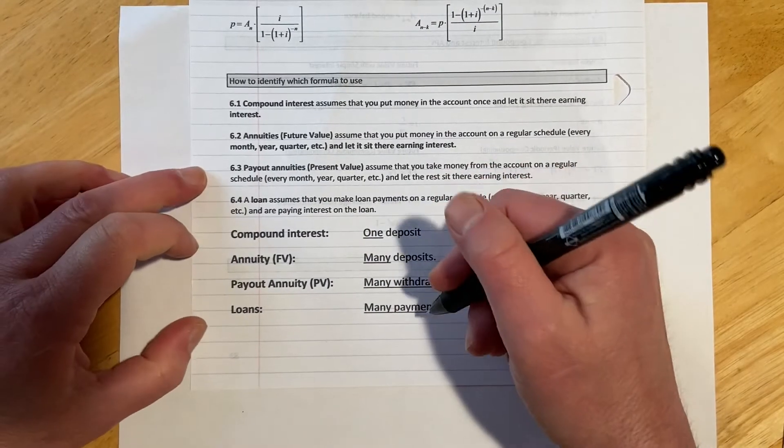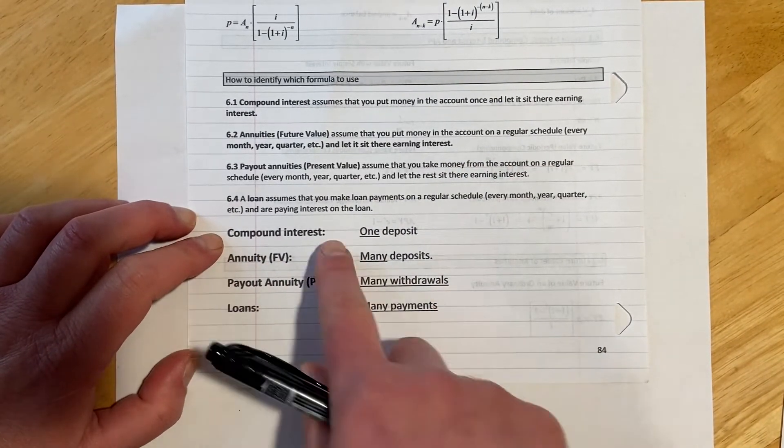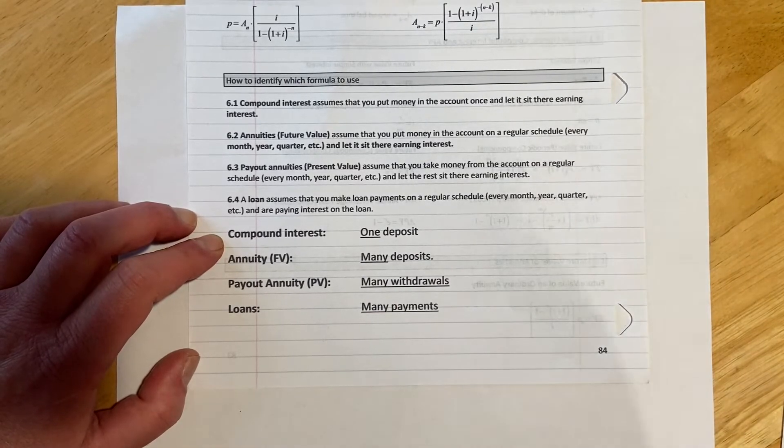So basically we have four things, 6-1 through 6-4, and we had compound interest. You can tell that one because we make one deposit, we're depositing a lump sum, we're going to have some money later.